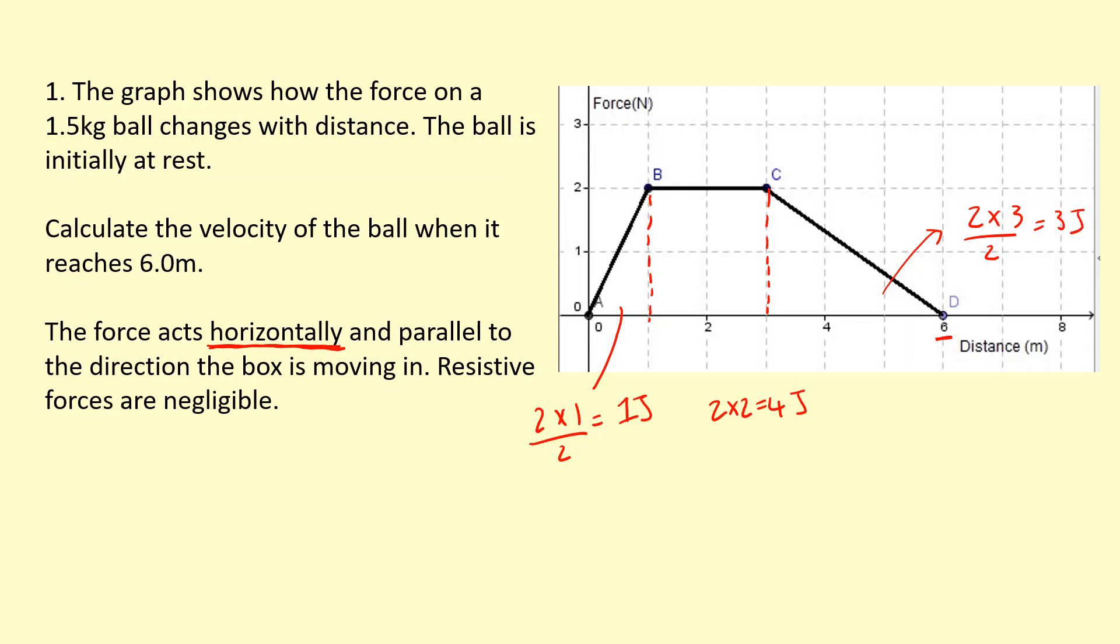It's not moving up or down, so there's no change in gravitational potential energy. And there's no resistive forces, so all of this energy is going to turn into kinetic energy. So I can write that equal to half m v squared.